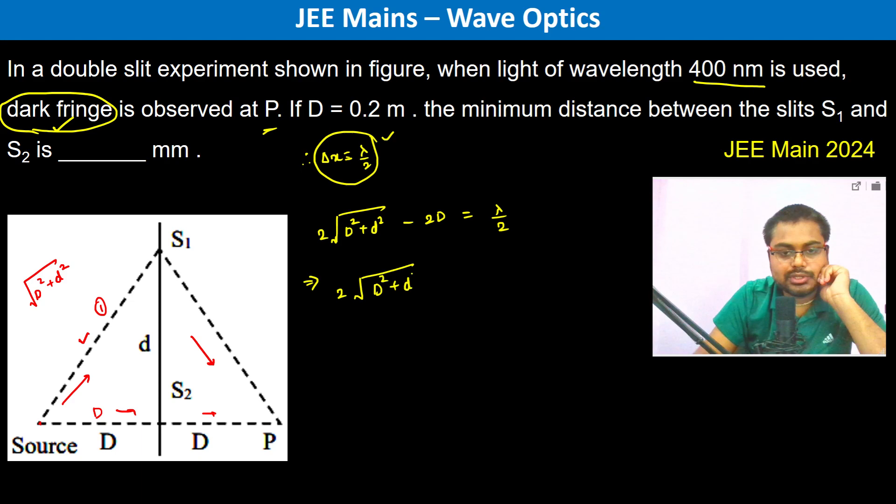So we have 2 root over D square plus d square should be equal to 2D plus lambda by 2. Now this has to be quite less because lambda is nowhere in comparison with big D, so therefore we square both the sides.